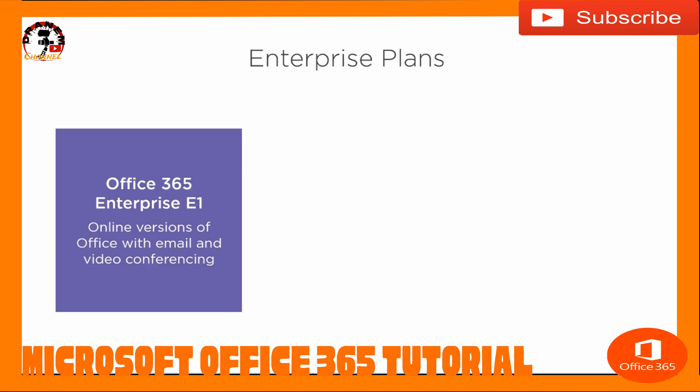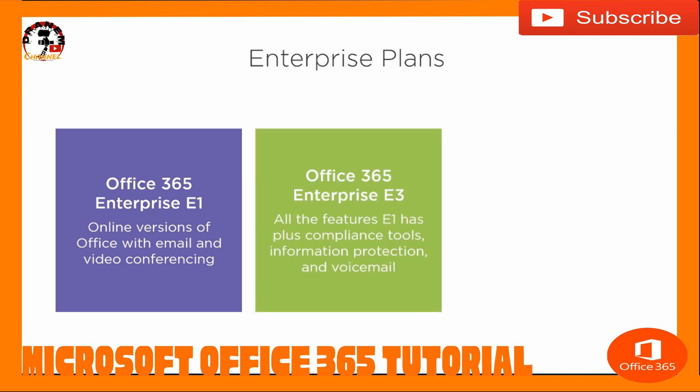The first one we're going to look at is the Office 365 Enterprise E1. This gives you online versions of Office with email, and it also gives you video conferencing. We also have the E3 plan, which has all the features of E1, but it also has some compliance tools, information protection, and voicemail.